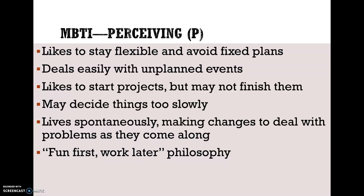Perceiving types are people who can say 'Hey, let's go to Vegas' and just up and go. They say that in a crisis or emergency situation, you don't want the Judger in charge — you want the Perceiving person, because they can quickly decide what to do, get everybody together, and exit the premises. Perceiving types deal with unexpected situations pretty easily. They like to stay flexible, avoid fixed plans, deal easily with unplanned events, like to start projects but may not finish them, may decide things too slowly, and live spontaneously — making changes to deal with problems as they come along. Fun first, work later.